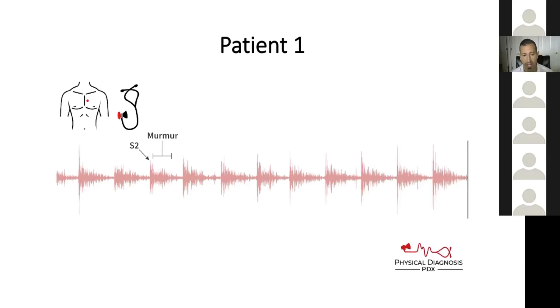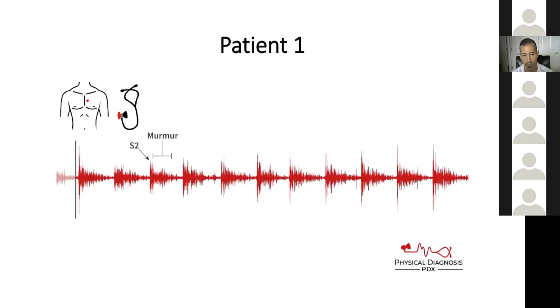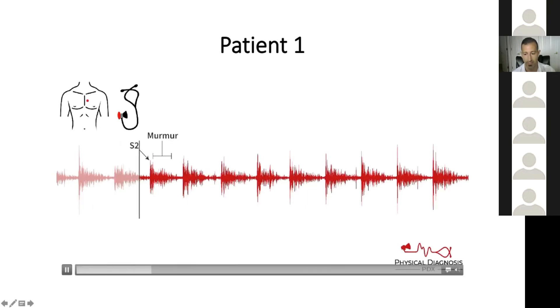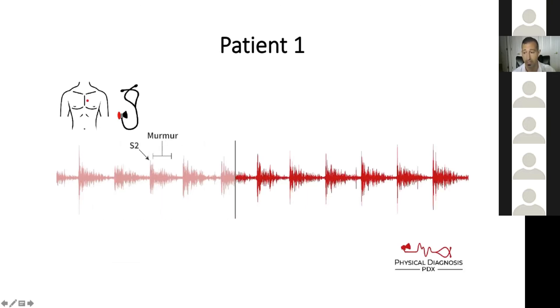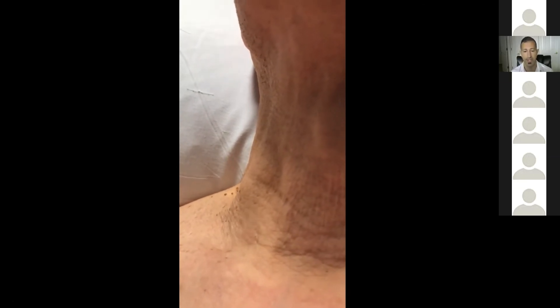You hear a decrescendo diastolic murmur right over Erb's point, which is consistent with aortic regurgitation. Now you're thinking aortic regurgitation is very likely. What would you expect to see in the patient's neck? What would the carotid pulse look like? You might expect to see a bounding pulse — in the neck, this is called Corrigan's pulse. And that's indeed exactly what you see: a bounding carotid pulse. You put all of these clues together and synthesize them, making a diagnosis of aortic insufficiency.